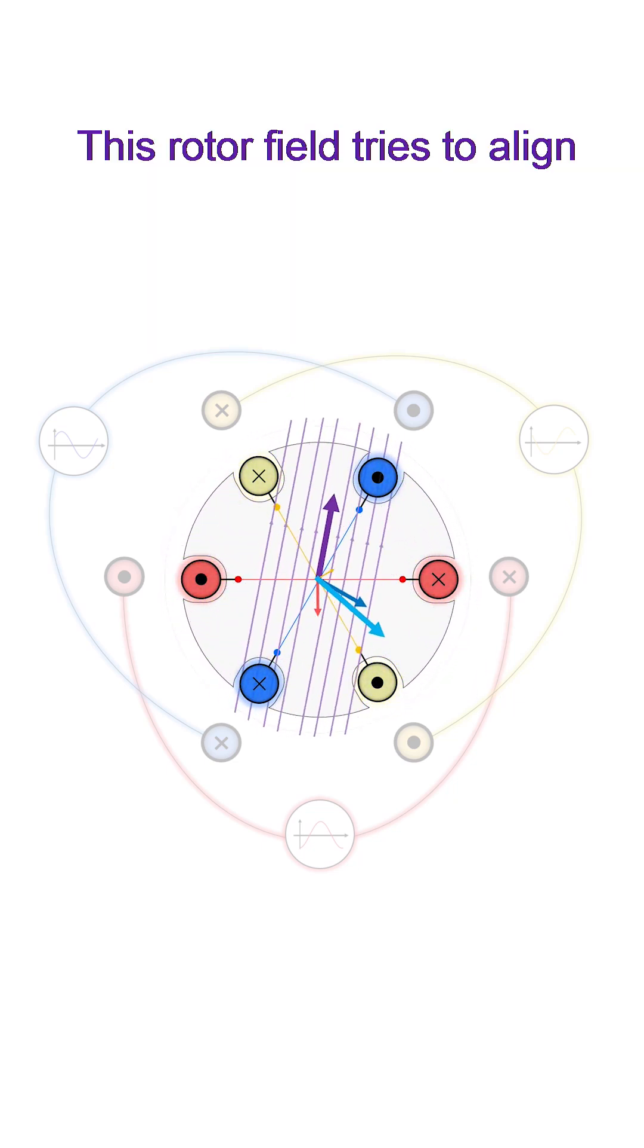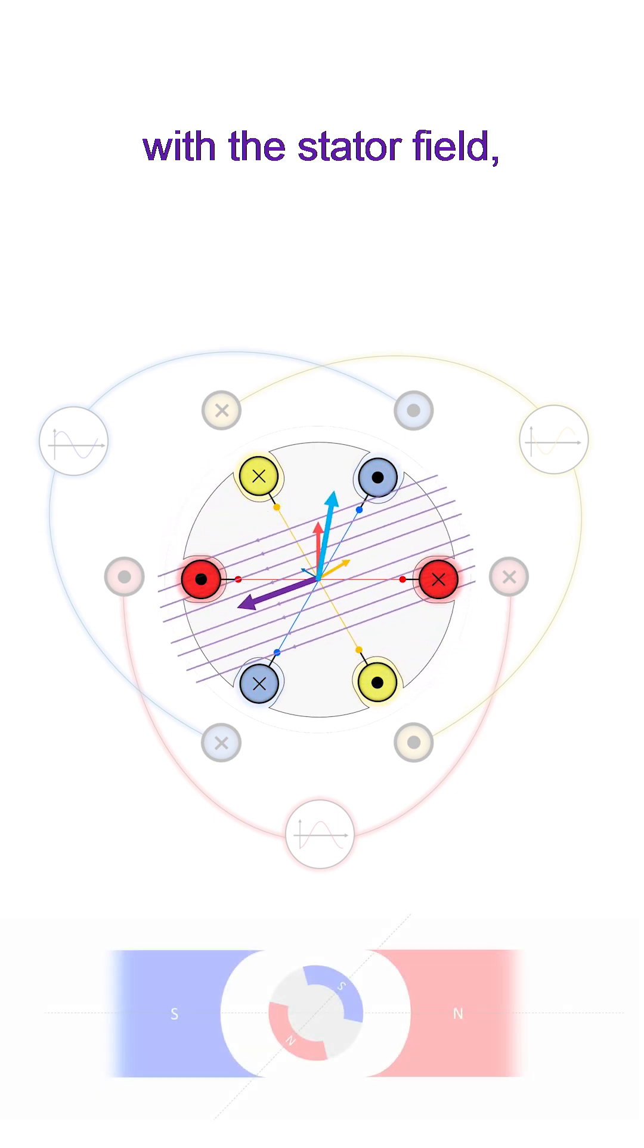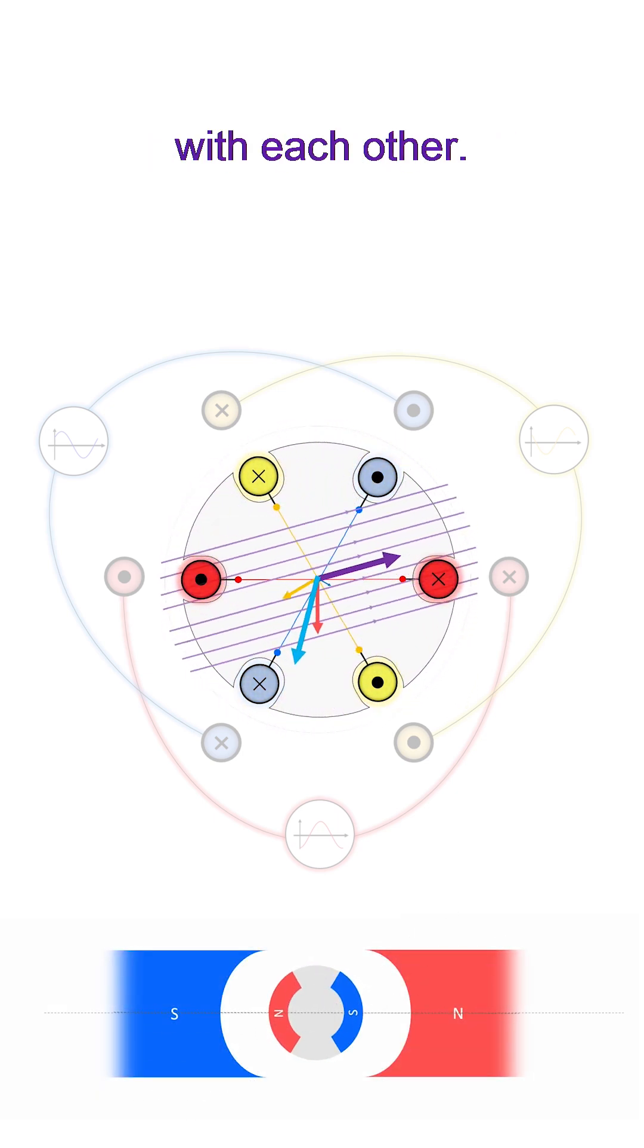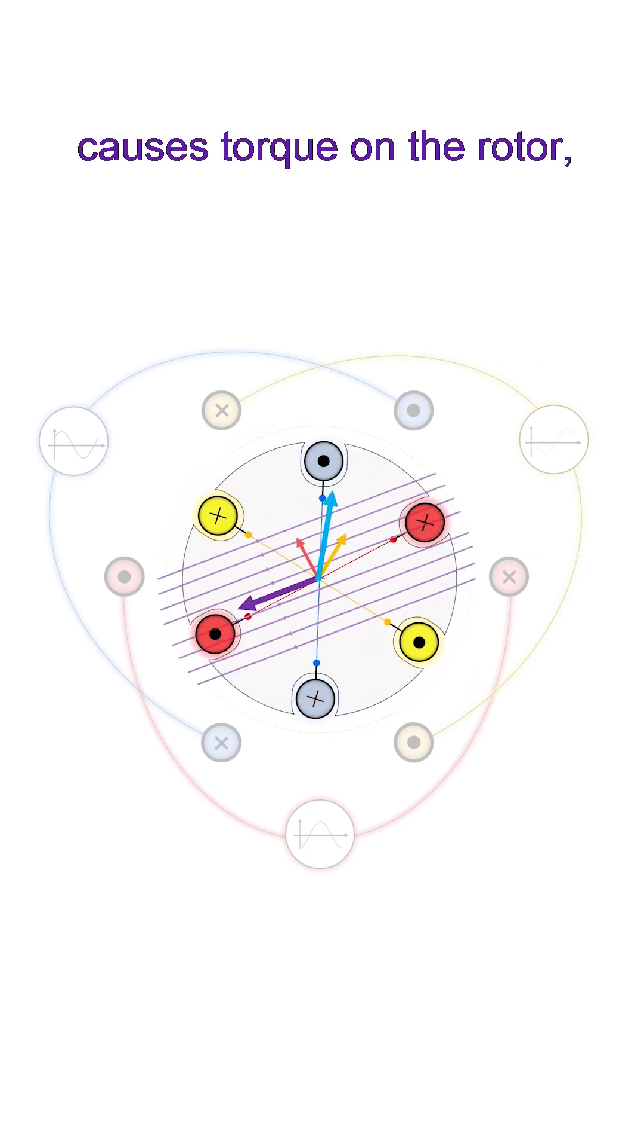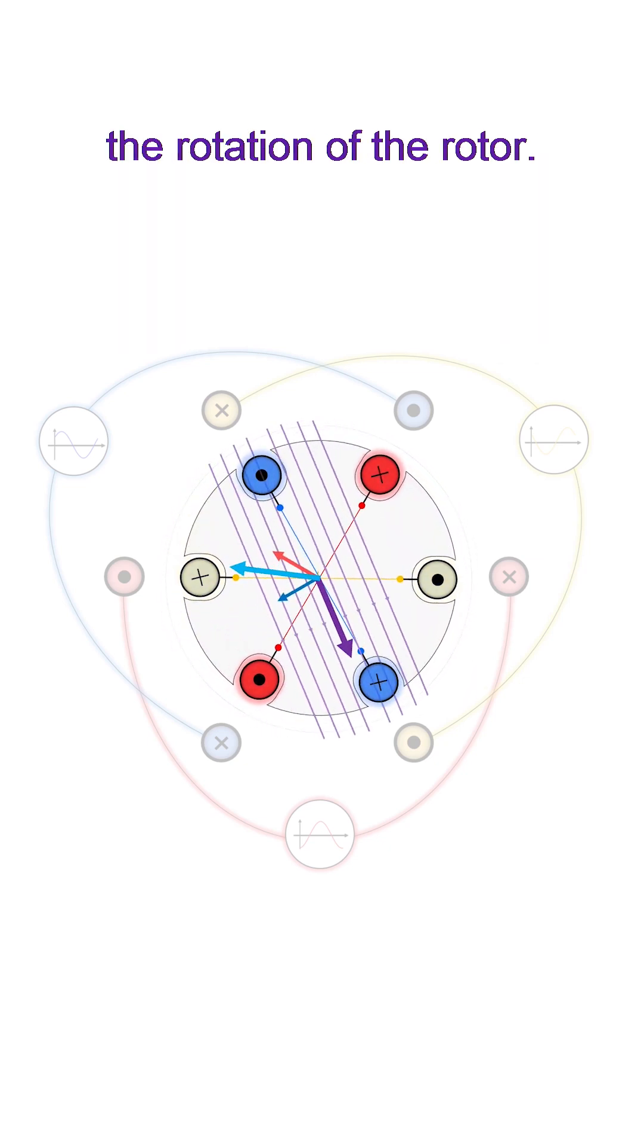This rotor field tries to align with the stator field, much like two magnets trying to align with each other. This alignment effort causes torque on the rotor, which leads to the rotation of the rotor.